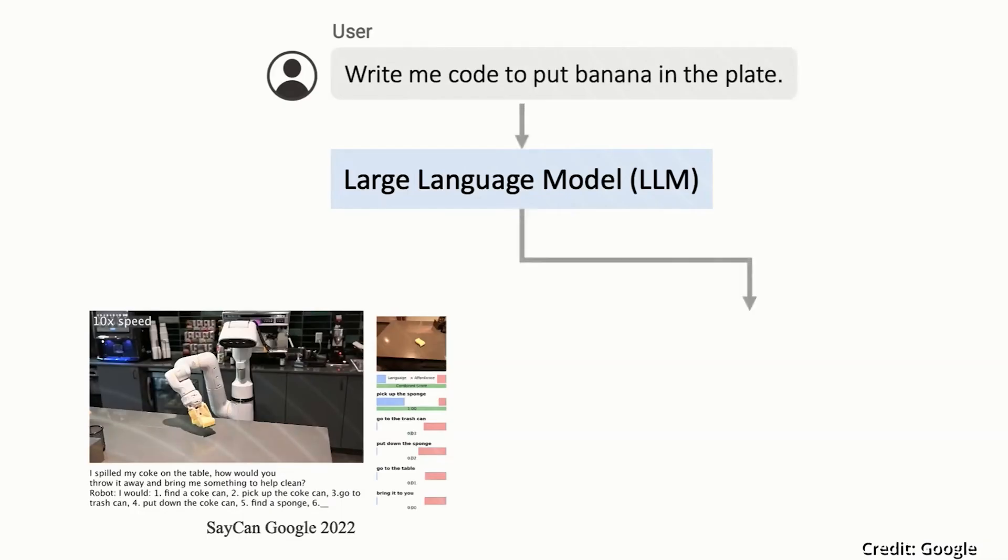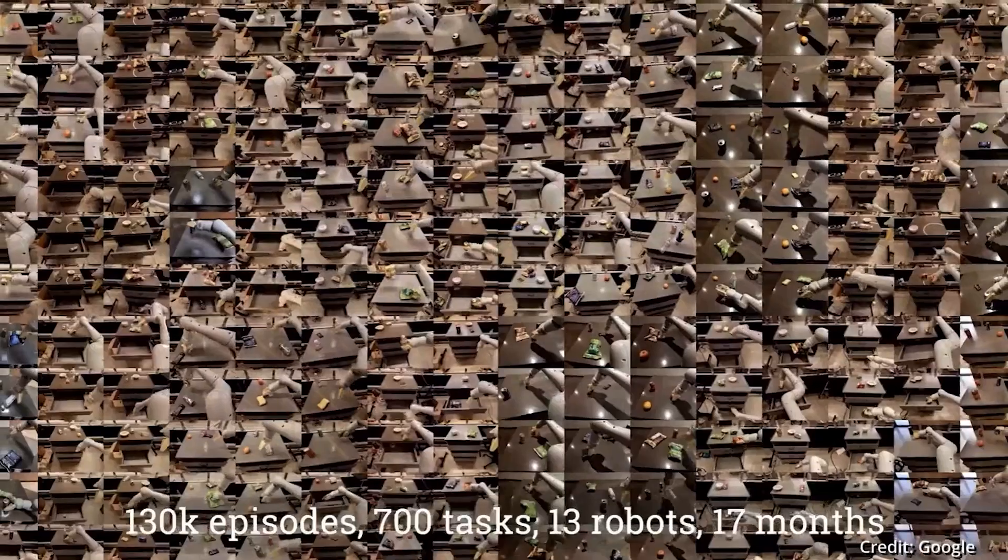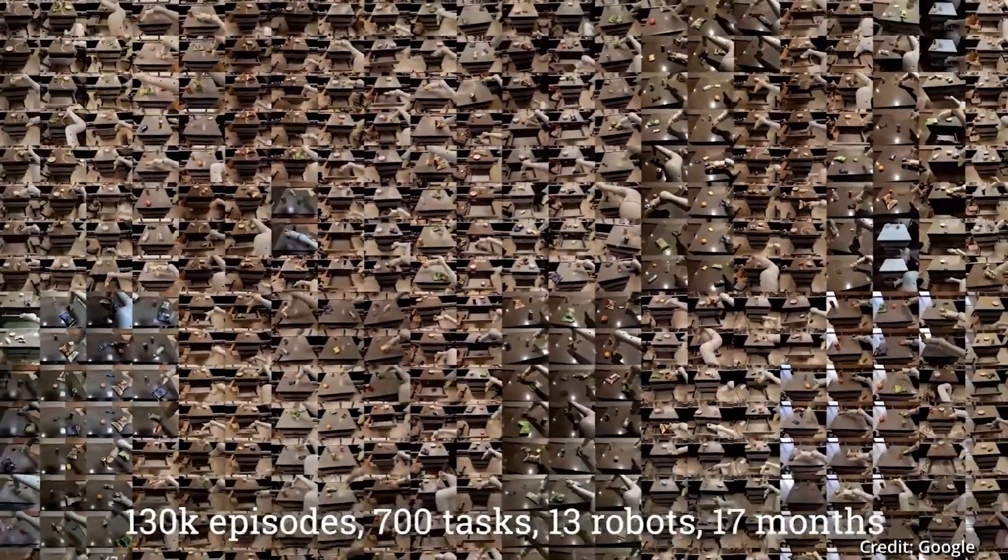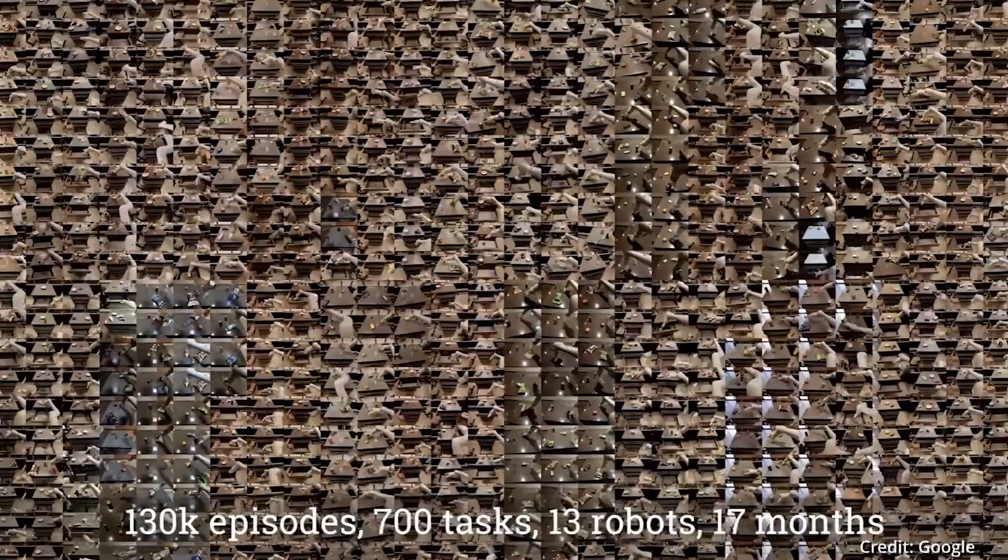So DeepMind combined the architecture of Gato with a large dataset that had many robots doing a variety of tasks, roughly hundreds of different tasks.